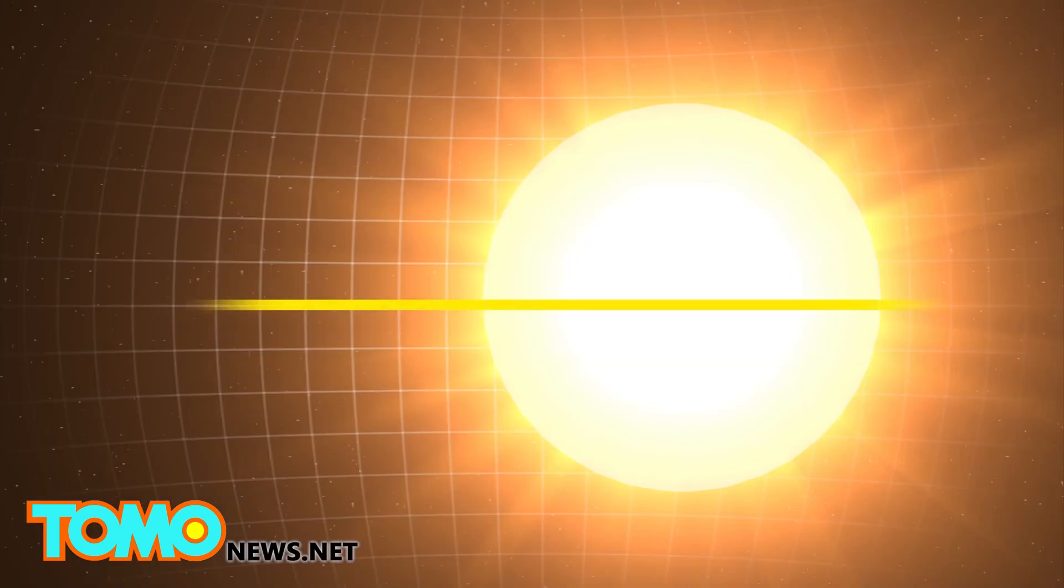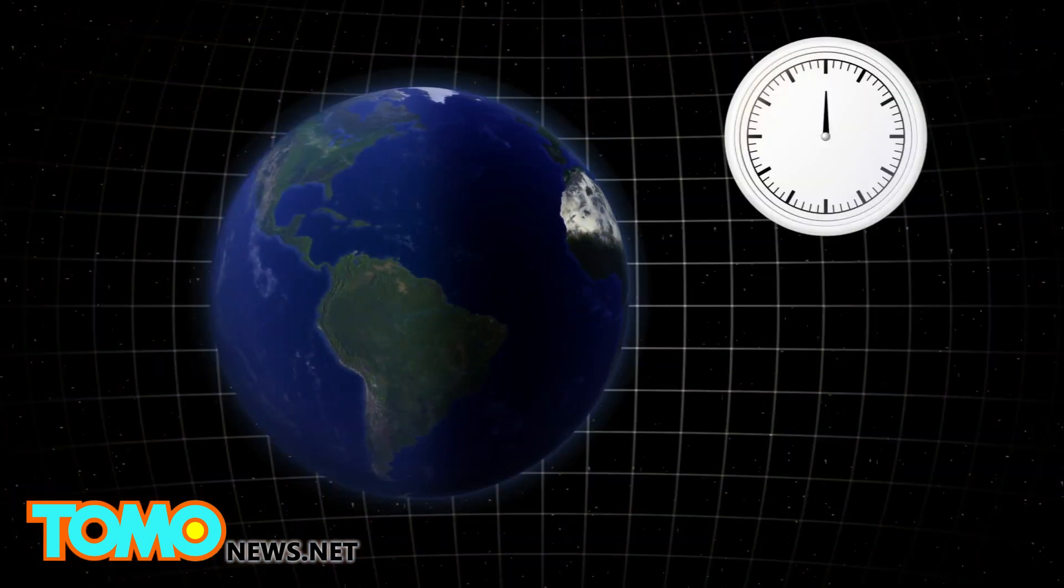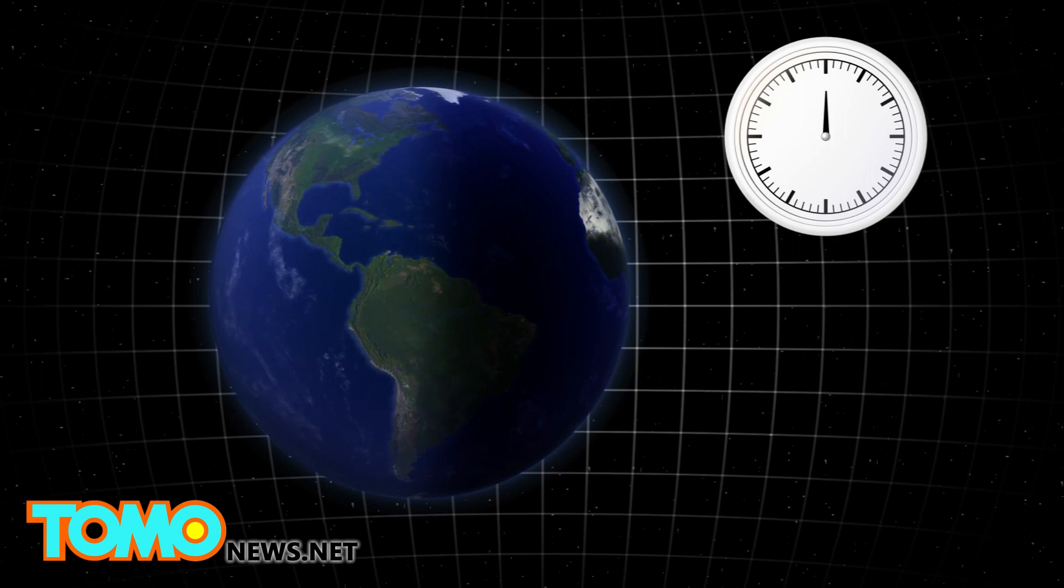Equinox is Latin for equal night, and marks the moment when the sun passes over the equator. In spring, this is known as the vernal equinox, while in fall, we know it as the autumnal equinox. On these days, daylight and night time are both 12 hours long.